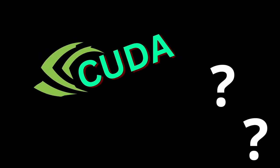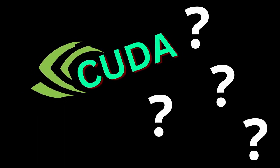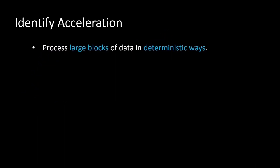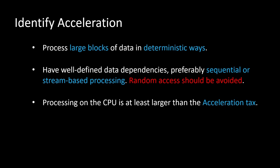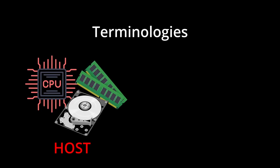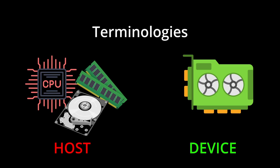So what exactly can we accelerate in our algorithm? There are three things to keep an eye on for implementing acceleration. The first is processing large blocks of data in a deterministic way, which also means the variables or the data are not related to each other. Next, have well-defined data dependencies, preferably sequential or stream-based processing — always try to avoid random access. The final point is that processing time on the CPU should be at least larger than the acceleration tax. From now on, the CPU with its RAM and storage will be called the host, while the GPU or the graphics card with its thousands of CUDA cores will be referred to as the device.